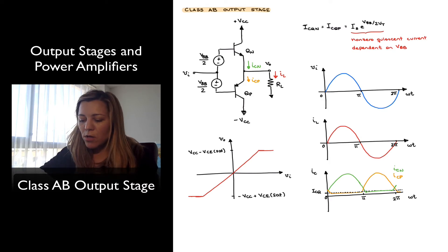And so essentially what those are going to do is that even when my input voltage is equal to zero, assuming that my VVB quantity is large enough, both of my transistors are going to be still on. And so there's going to be some quiescent current, non-zero quiescent current, which I've labeled as ICQN equal ICQP,